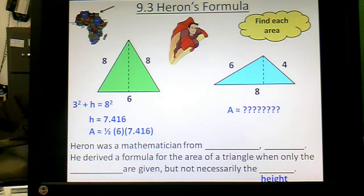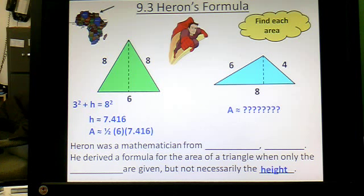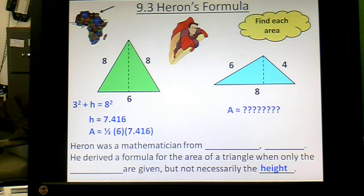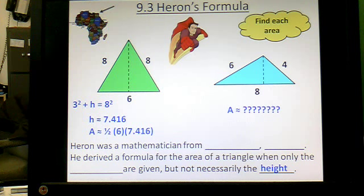This little paragraph here on your paper is to just talk about who Heron was. He's a mathematician from this little part of the world. There's a little picture there to remind you where he's from. All of you know what country that is. Northeastern Africa. Some of you just had a geography test, you freshmen. You obviously know that's Egypt.